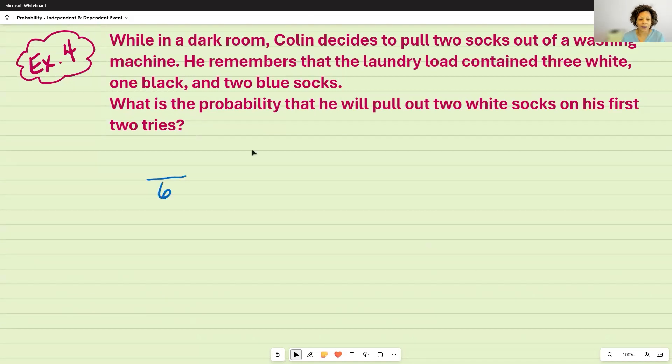So out of six, what's his probability of pulling out a white sock first? Well, we have three white socks. And then it says that was the first try out of two tries. So we know we're going to try again. But if he already pulled that sock out, that means that he's not going to put it back. He's trying to pull two socks out.